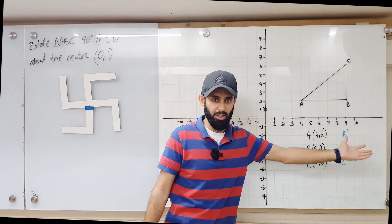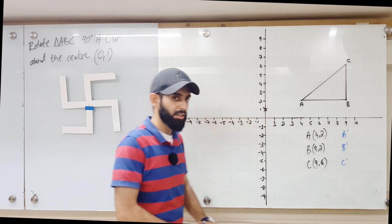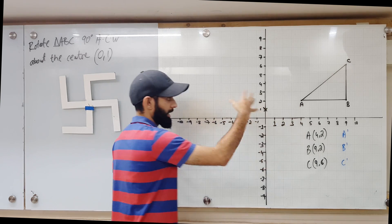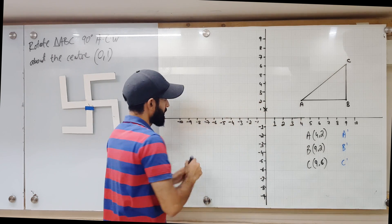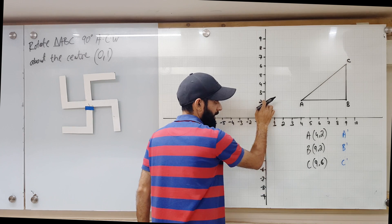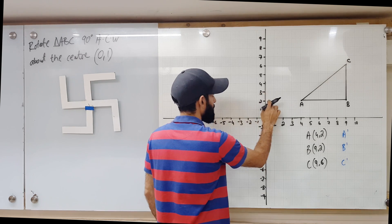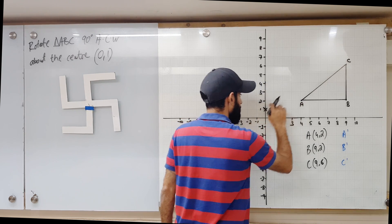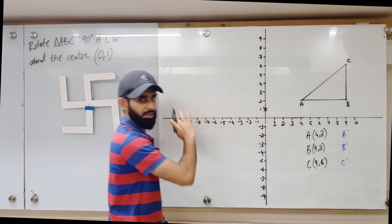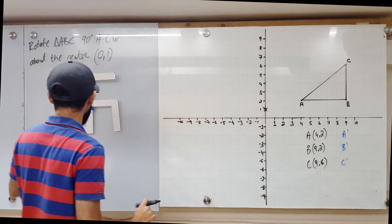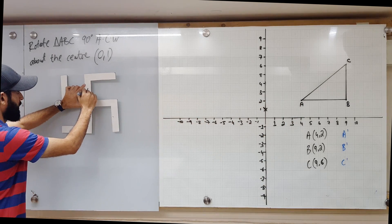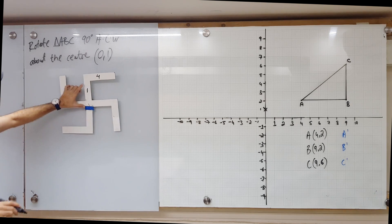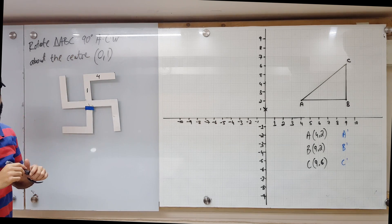If I count from the center the number of units I have to move in order to get to point A, that is going to be one unit up and then one, two, three, four — so one unit up and four units towards the right. Let's mark that: one unit up and four units towards the right. Remember, I'm rotating this 90 degrees anti-clockwise.